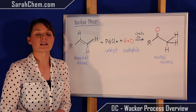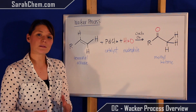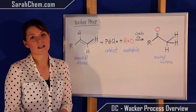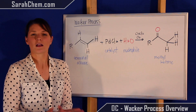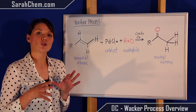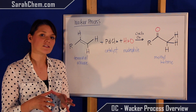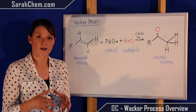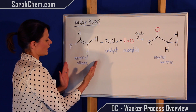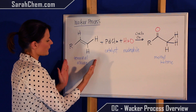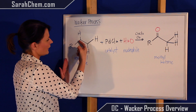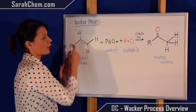Now, the mechanism for the Wacker process is not totally understood and it's pretty complicated, so I just want to distill it down to the essence of what you're doing for product prediction. If you take your terminal alkene, what you're ultimately going to do is remove that double bond and create a carbonyl.